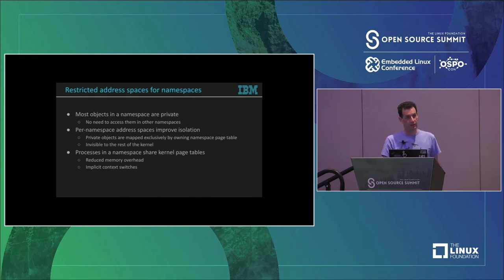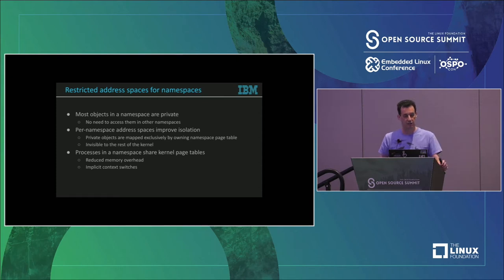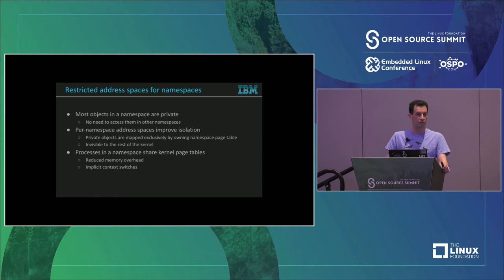Most objects in a namespace are already private and only used by kernel code that executes on behalf of processes running in that namespace. The idea is to provide a per-namespace address space to improve isolation of containers, and private objects will be mapped exclusively in that address space. If a malicious container gets control over the host, it still won't be able to exfiltrate data from other containers. To prevent multiple additional context switches, processes running in the same namespace will share the same page tables and the same address space.